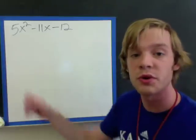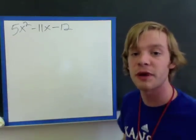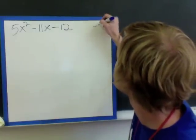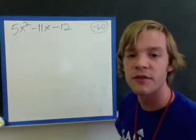So what we want to do is we want to multiply the 5 and the negative 12 together. So if I multiply those, I'm going to get negative 60. Write that off on the side.